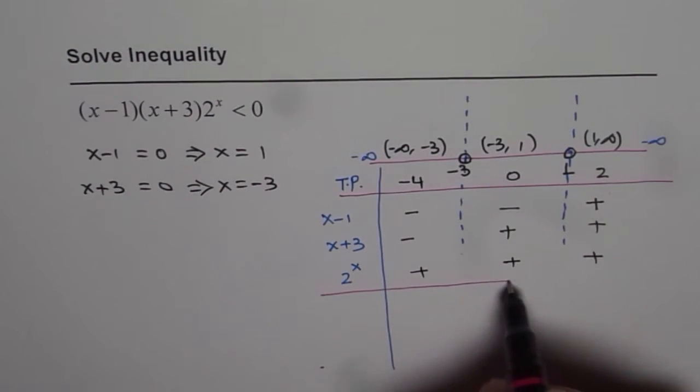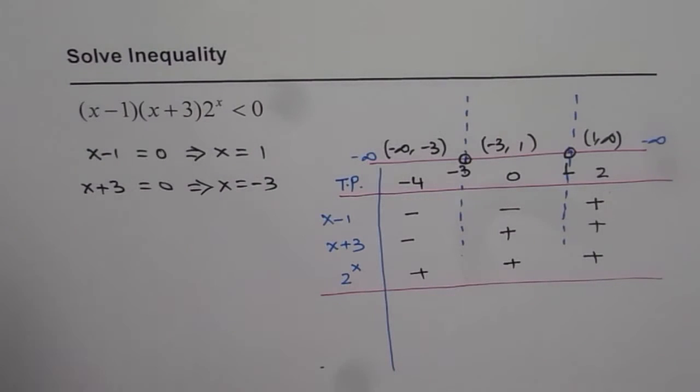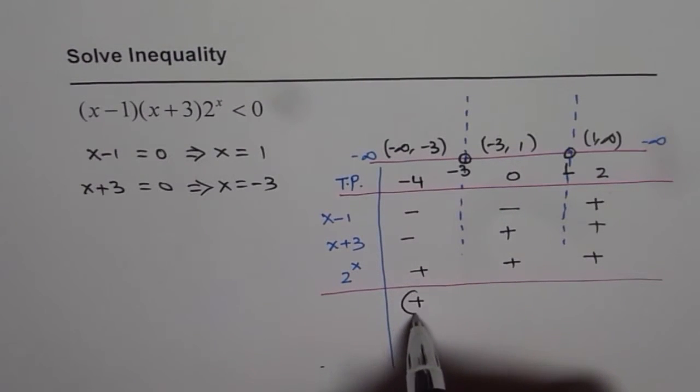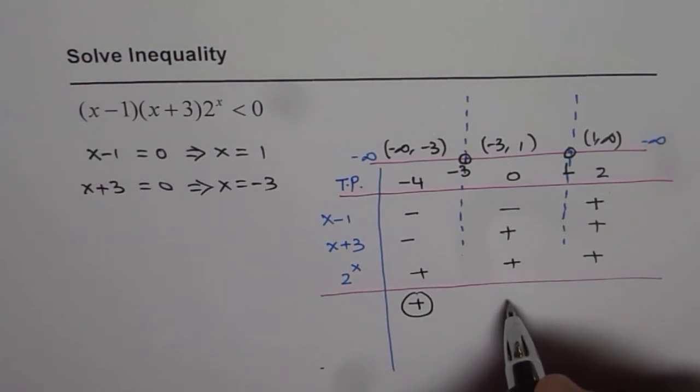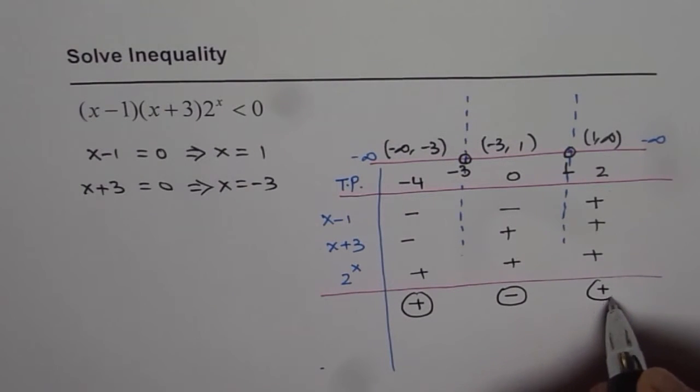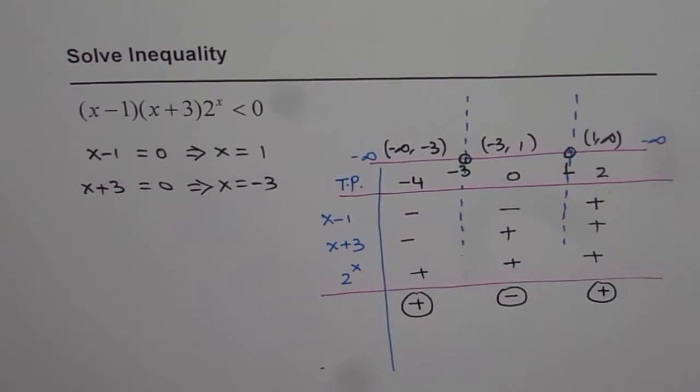Now if you multiply the factors, two negatives and a positive, you will get positive. One negative and two positives, you will get negative. Three positives when multiplied together will give you positive.